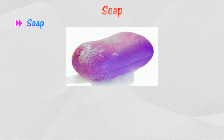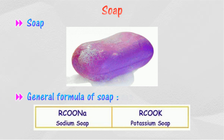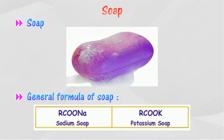Soap is a salt that is formed from the reaction between an alkali and a fatty acid. The general formula of soap can be represented by the following formula. In this formula, R is a long chain alkyl group which contains 12 to 18 carbon atoms.